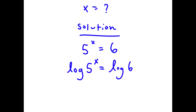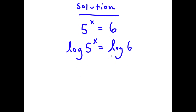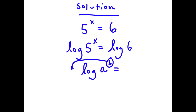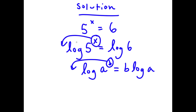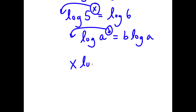If I have something in the form log a to the power of b, I can move the exponent to the front, so it equals b times log a. In this case I have log 5 to the power of x, and I can move the exponent x to the front, giving x times log 5 equals log 6.